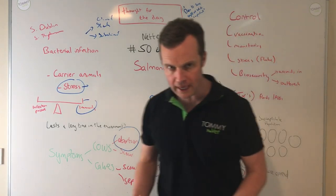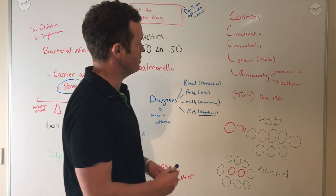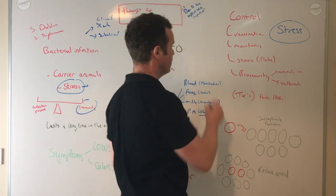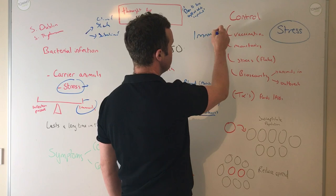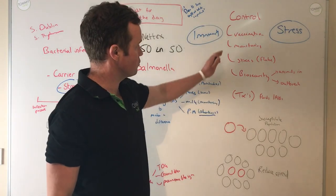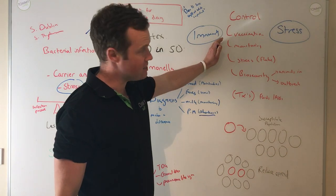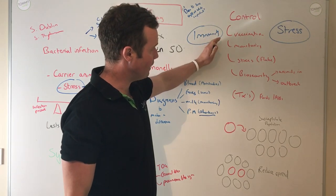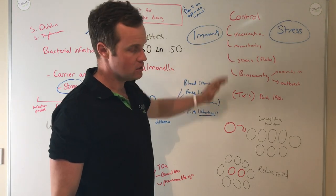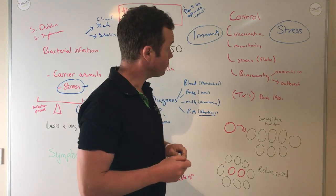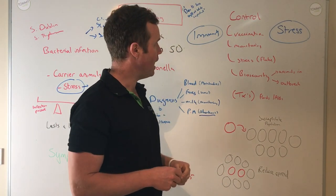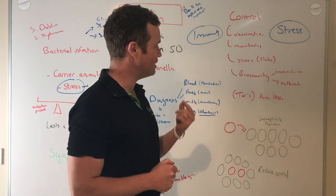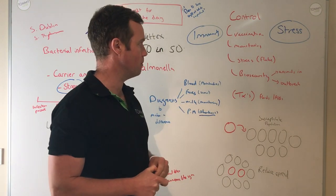For control mechanisms on farm, stress must always be minimised — the key principles are minimising stress and building up immunity. We have a very good vaccine for Salmonella and vaccination works really well. For herds at risk, timing is key — if you're looking at managing abortion control, I would tend to vaccinate in late summer. You get some transfer to calves as well. You need to give two shots initially and then an annual booster. Talk to your vet about the most appropriate vaccination programme for your farm.